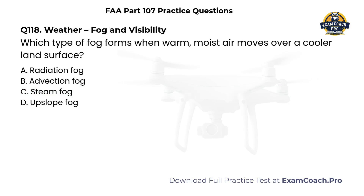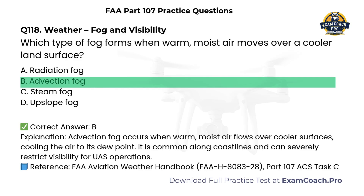Weather. Fog and visibility. Which type of fog forms when warm, moist air moves over a cooler land surface? A. Radiation Fog. B. Advection Fog. C. Steam Fog. D. Upslope Fog. Correct answer: B. Advection Fog occurs when warm, moist air flows over cooler surfaces, cooling the air to its dew point. It is common along coastlines and can severely restrict visibility for UAS operations.